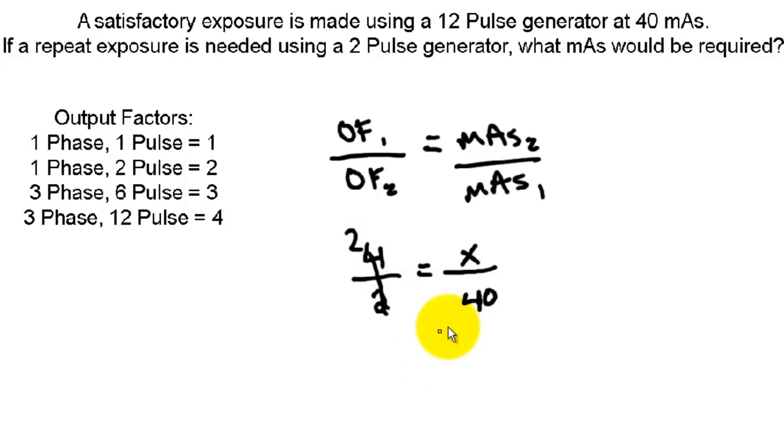That's a 4. Reduce this down to 2, cross multiply. 80 equals, it's going to be 1x or x.